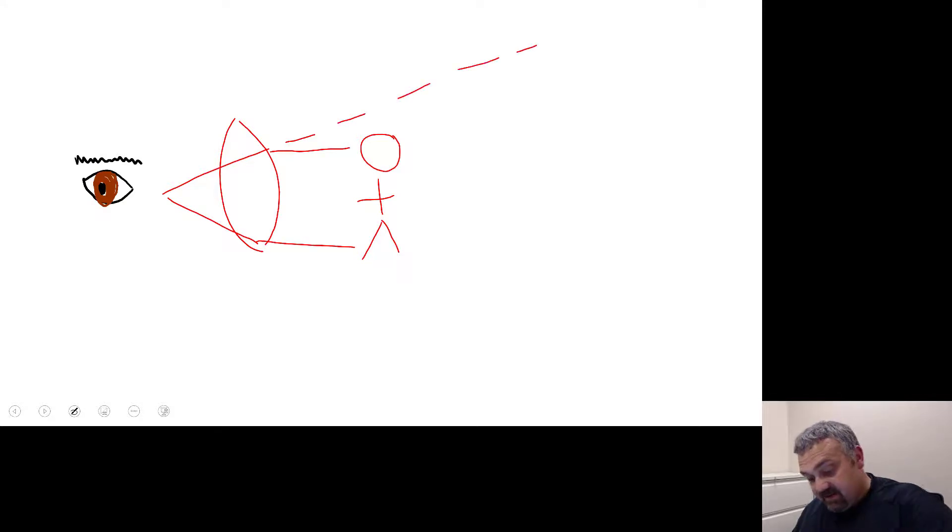Your brain thinks that this image is coming from here. So your brain thinks that this image is much larger. So that is really how microscopes work. If you've ever really thought about it, that is the actual gist of it.